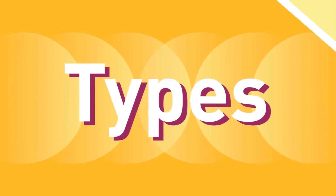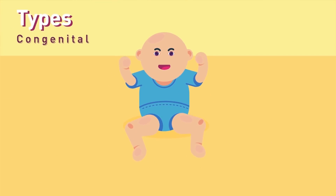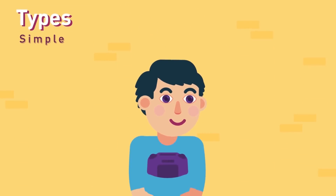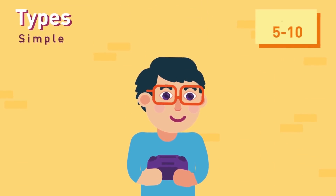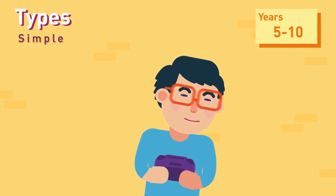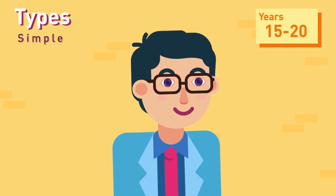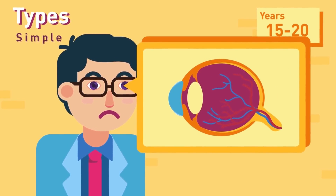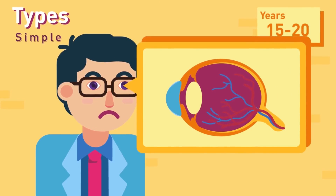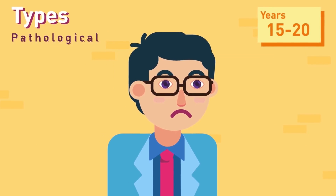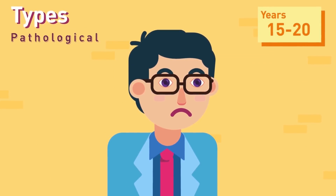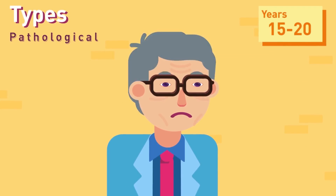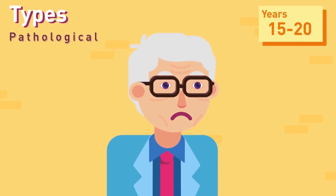Types. Congenital: from birth. Simple: the most common type; starts from 5 to 10 years till 15 to 20 years and is mostly due to curvature or length problem of the eyeball. Pathological: hereditary, progressive, and due to degenerative changes in the eyes.